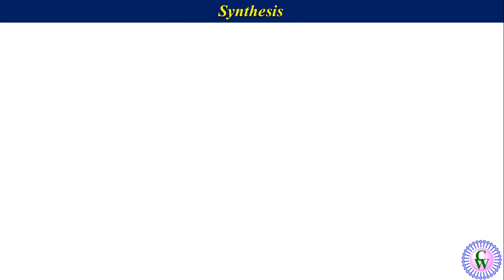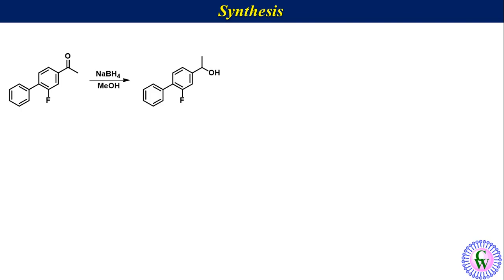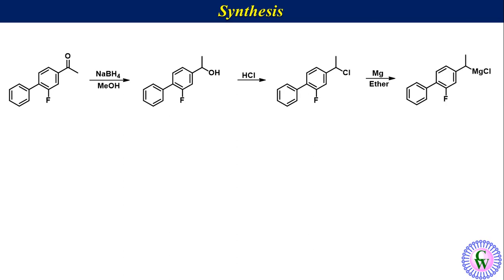Thus, the synthetic route will involve the reduction of the given ketone with sodium borohydride in methanol to produce an alcohol, which upon reaction with HCl will give the chloro compound. The chloro compound in the presence of magnesium metal in ether will give the corresponding Grignard reagent, which after reaction with carbon dioxide followed by acidic workup will give flurbiprofen.